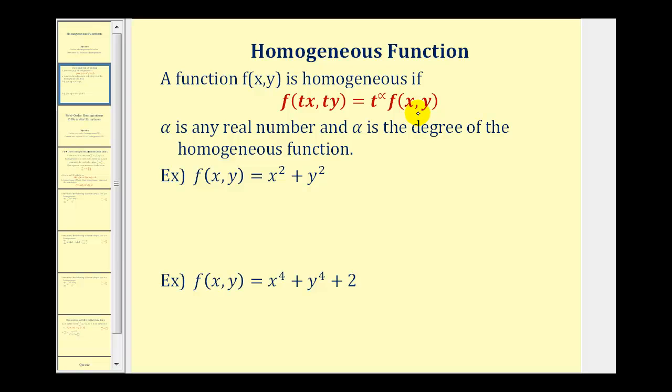Alpha can be any real number and is the degree of the homogeneous function. We substitute tx for x and ty for y. Once we do this, if we can write it so that it's t raised to some power times the original function, then the original function is homogeneous.